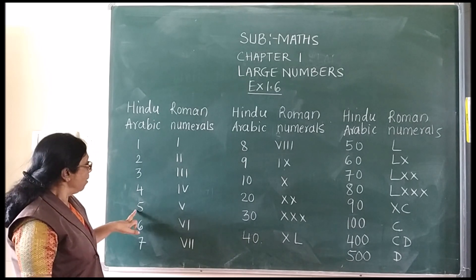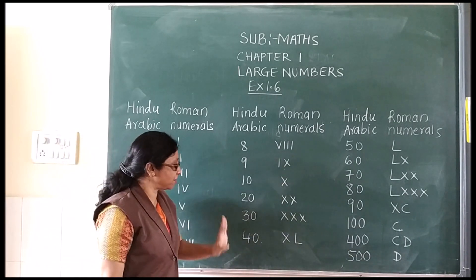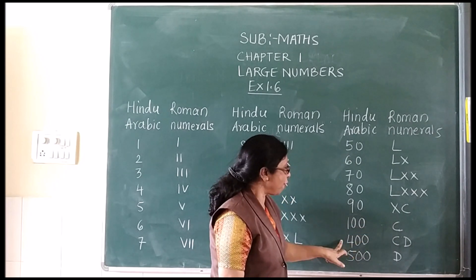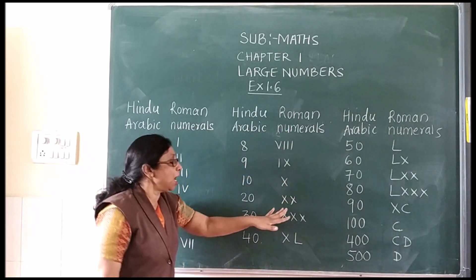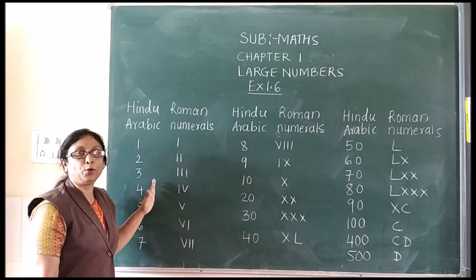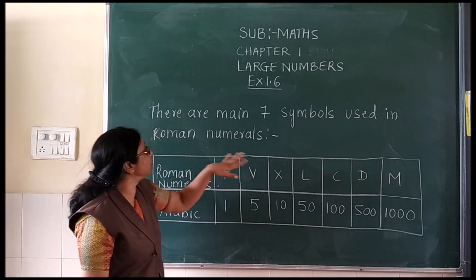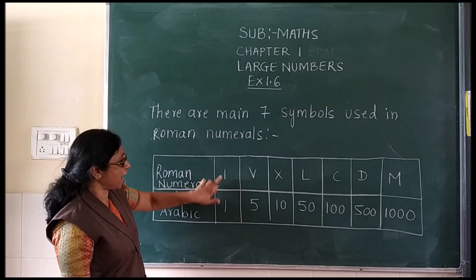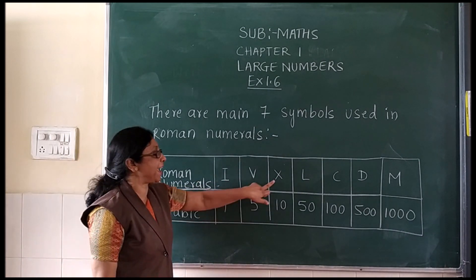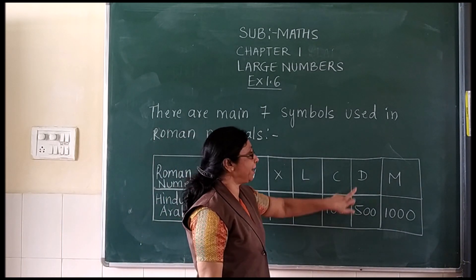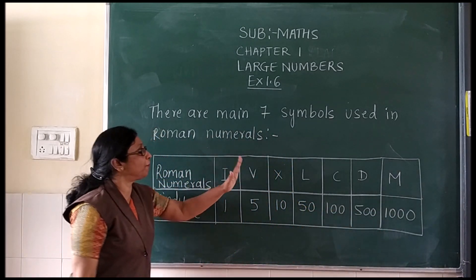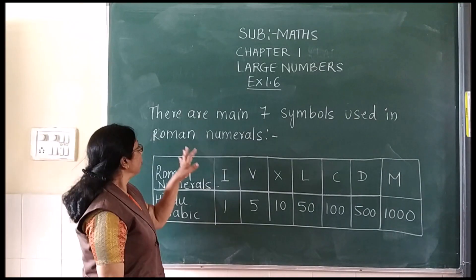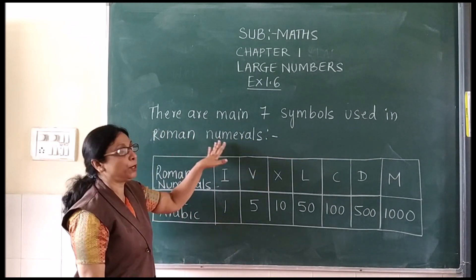I will highlight the main values: 5 = V, 10 = X, 40 = XL, 50 = L, 90 = XC, 100 = C, 400 = CD, 500 = D. There are 7 main symbols used in Roman numerals: I = 1, V = 5, X = 10, L = 50, C = 100, D = 500, M = 1000. You must know these nicely.